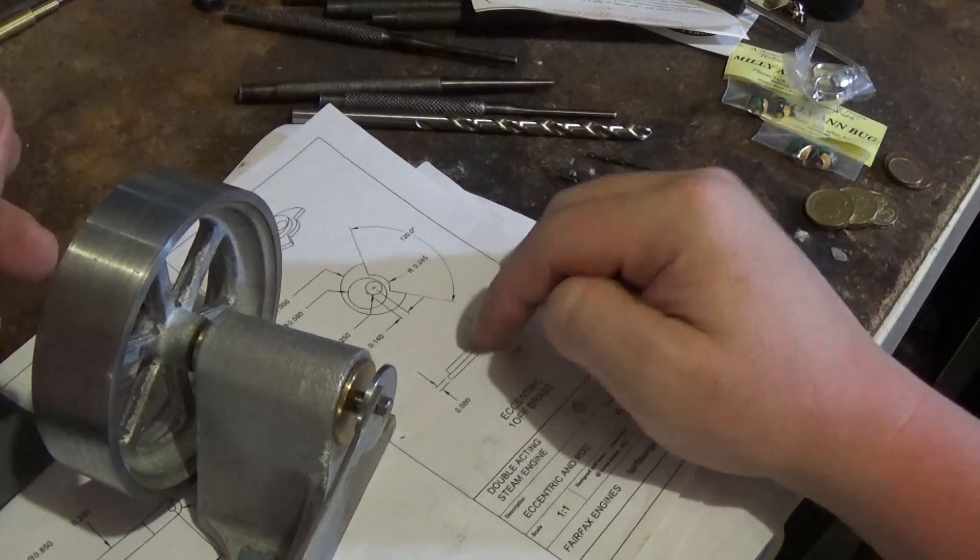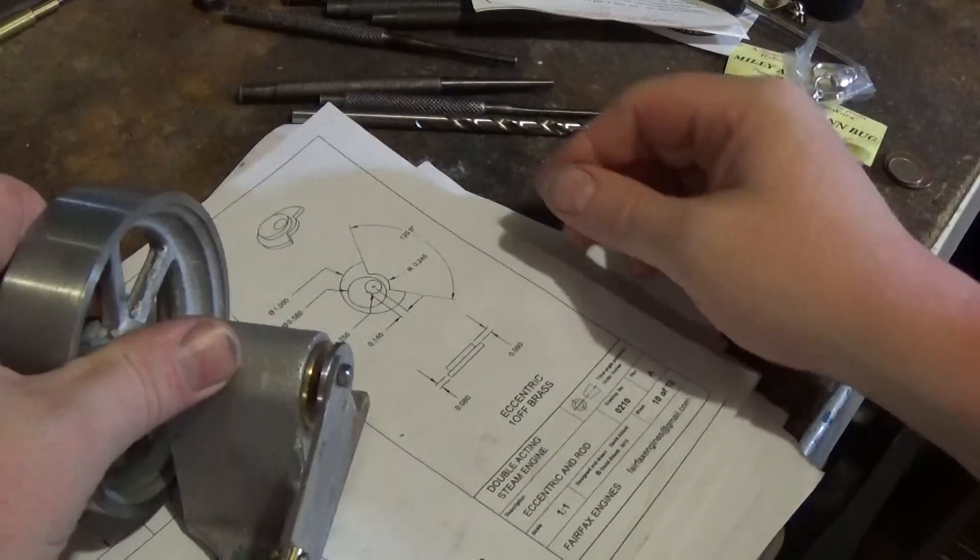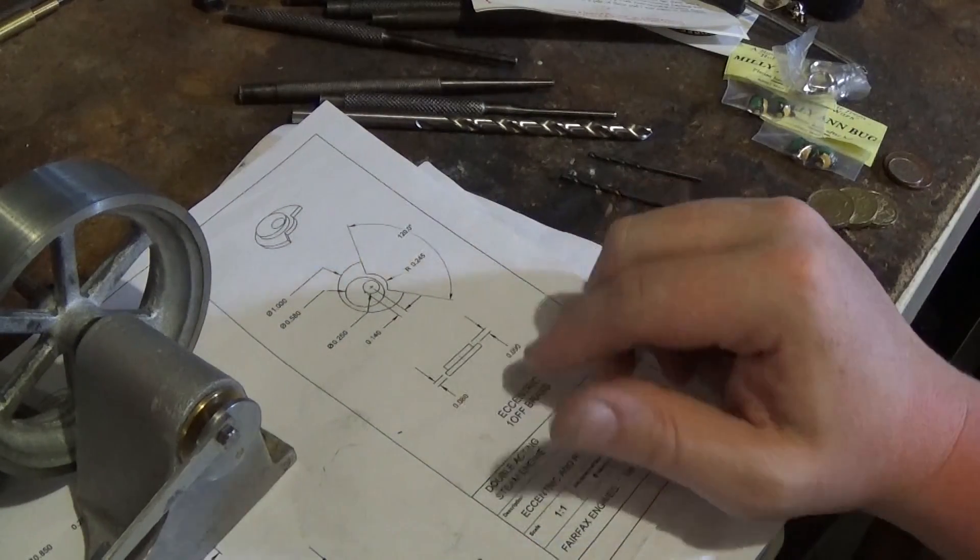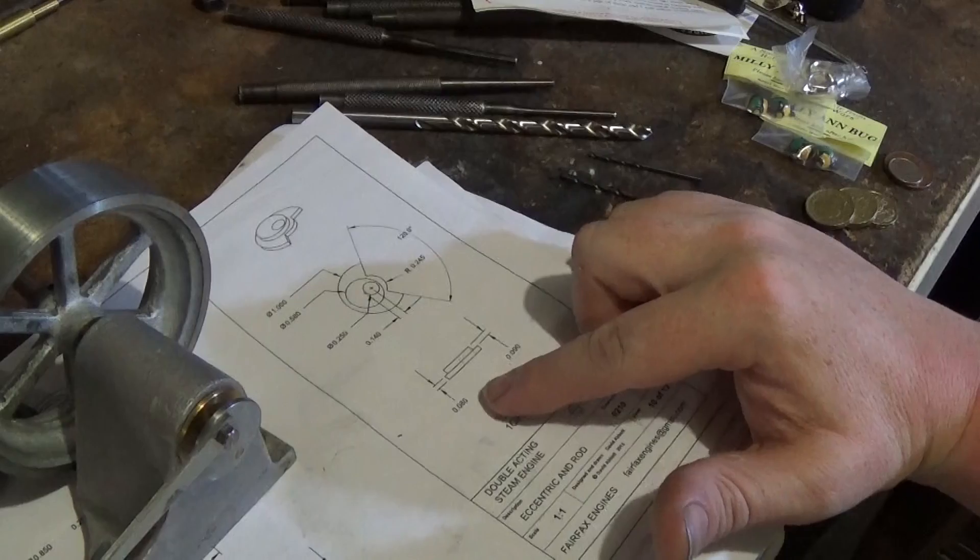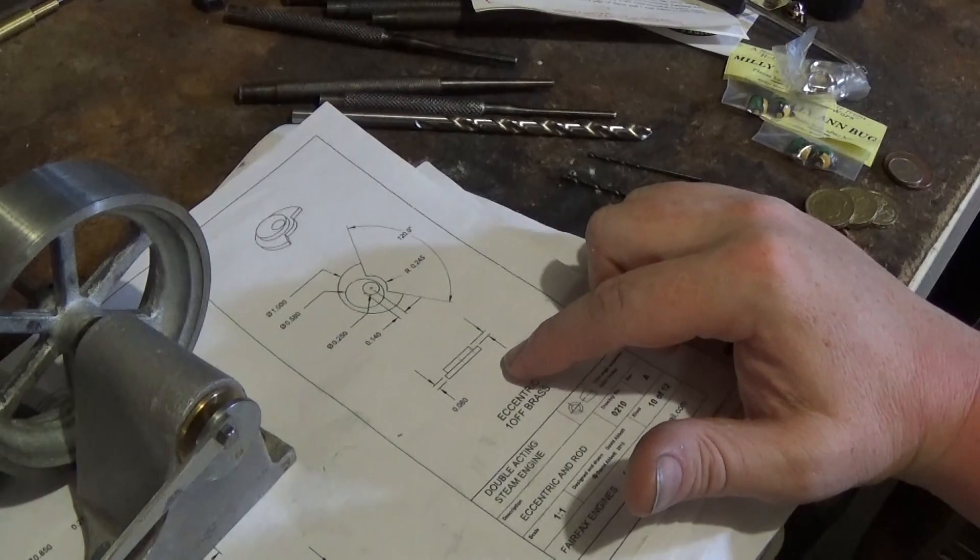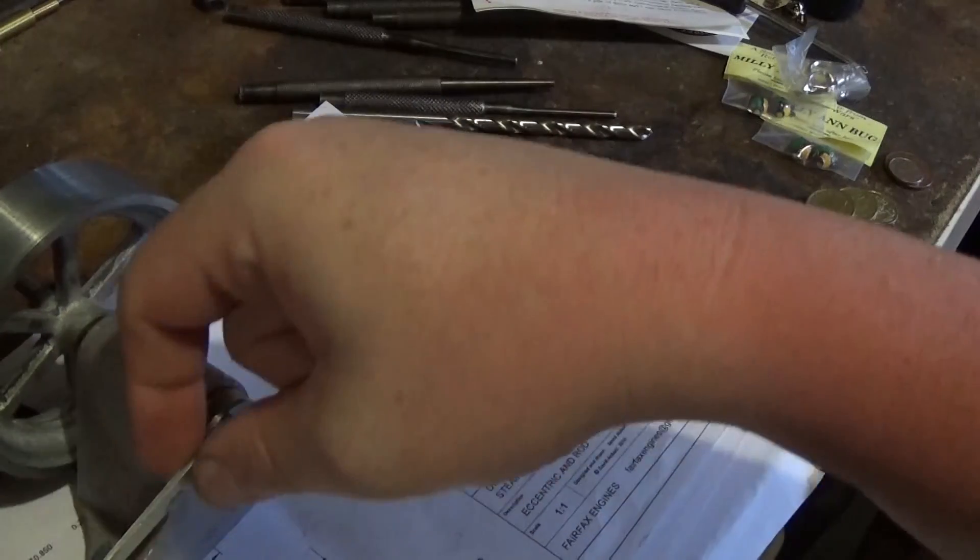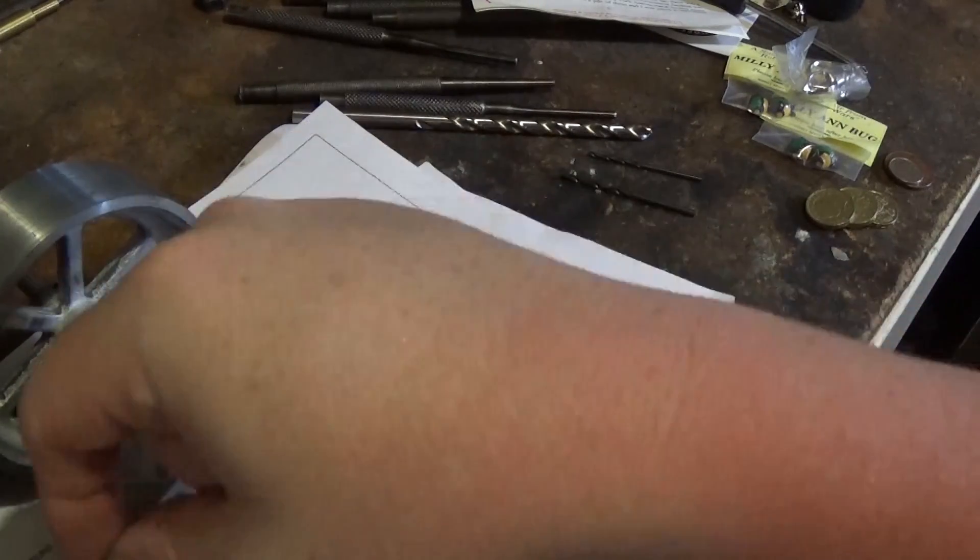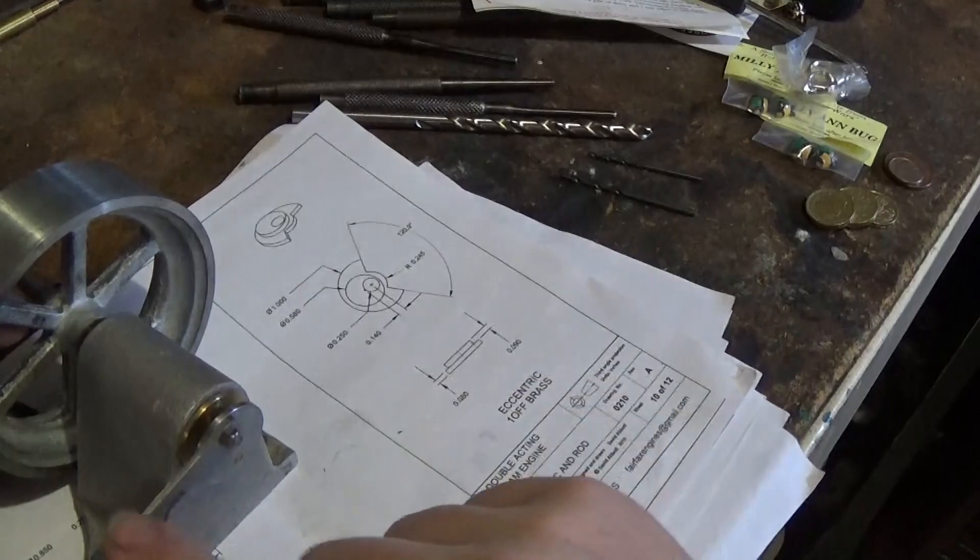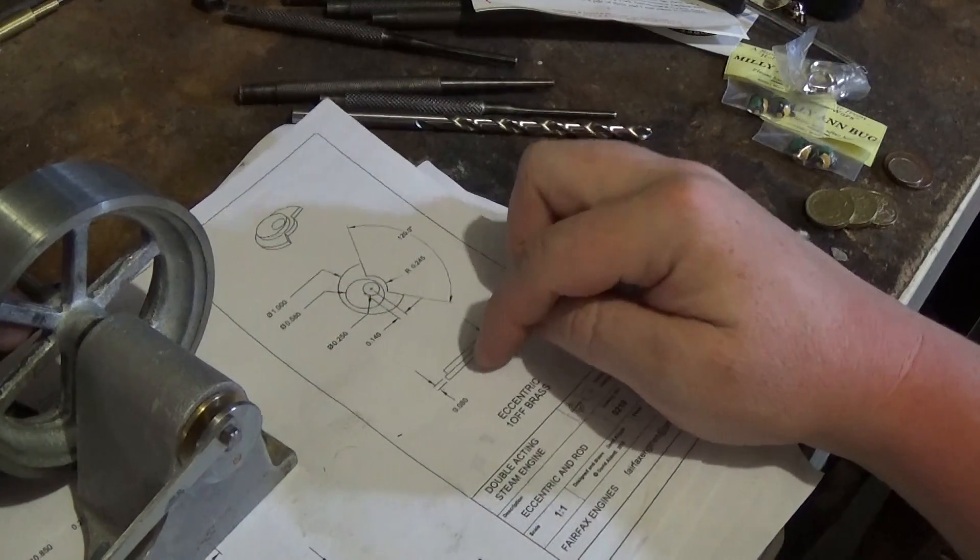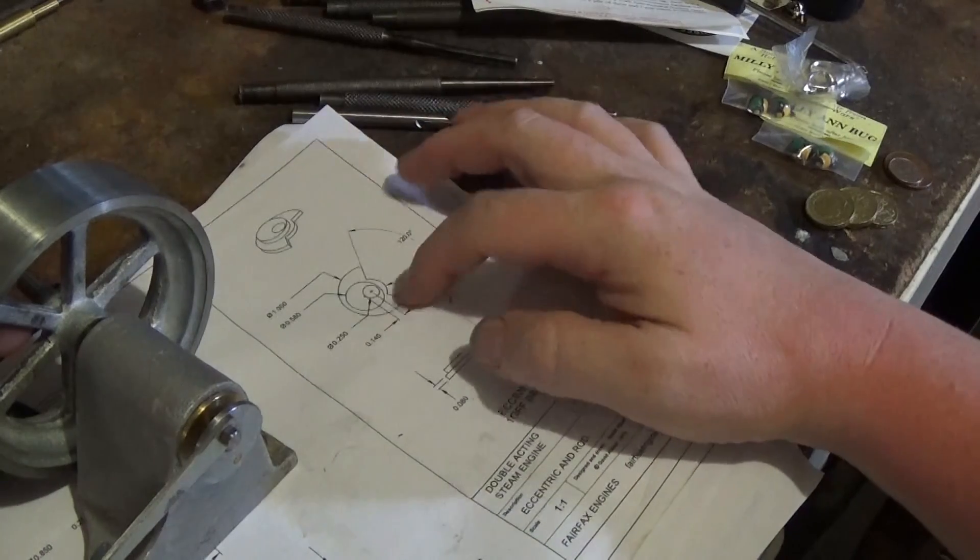If we have a look here at the drawing, it's 90 thou wide for the piece of tin for the rod, and 80 thou for the cam or the slipper eccentric. So we're going to go a little bit thicker than that and call it 178.